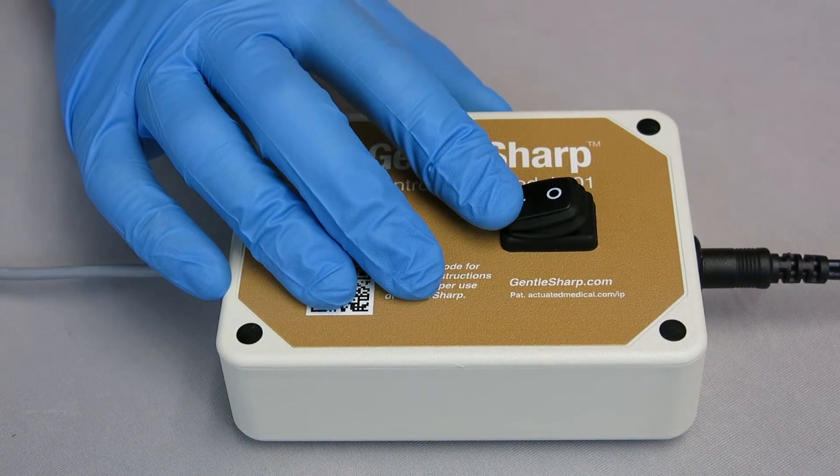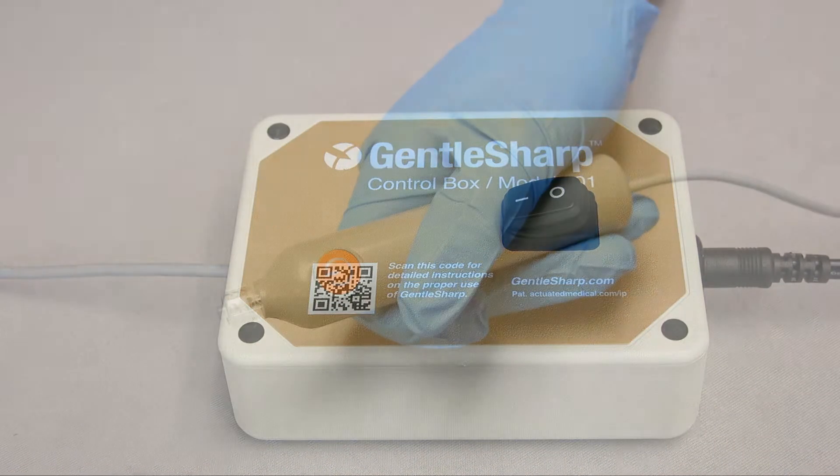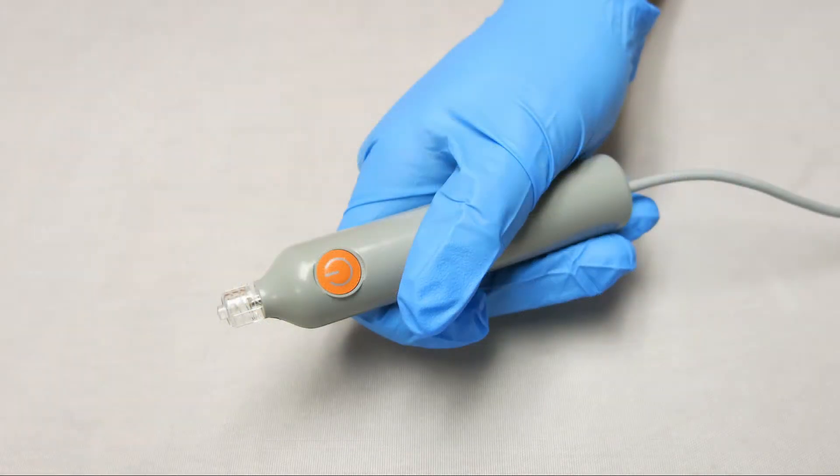Verify the control box is operational by pushing the on-off power switch to the on position. The control box will produce an audible tone when powered on. Note that GentleSharp will not vibrate at this time. The start-stop button on the handpiece causes the vibration. For now, do not press the start-stop button.